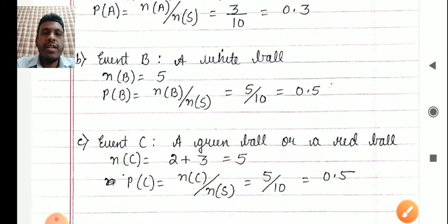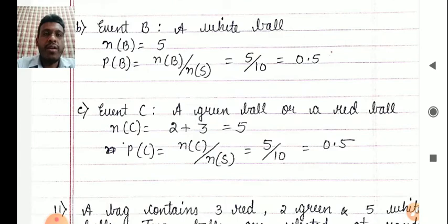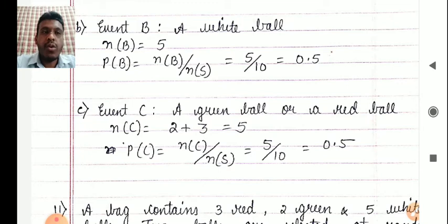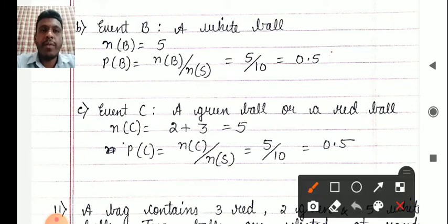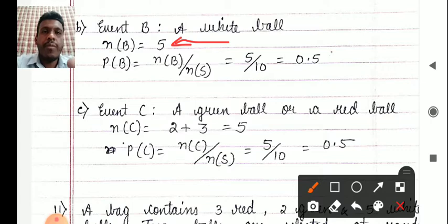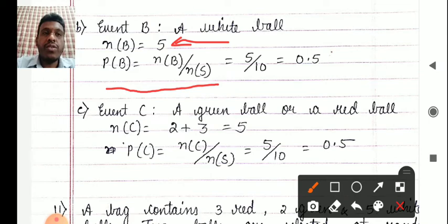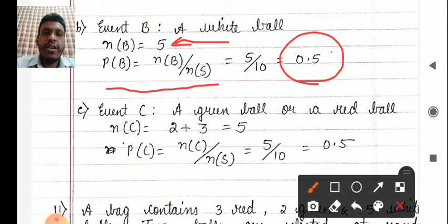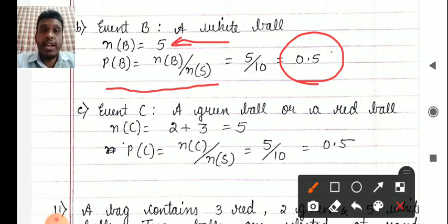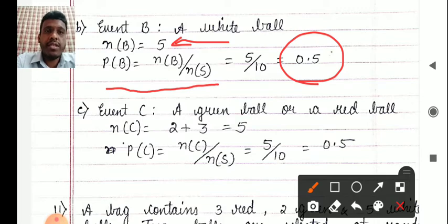Now let us take the second event: a white ball. Suppose the selected item is a white ball. How many white balls are there? We have five white balls. So P(B) = n(B) / n(S) = 5 / 10 = 0.5. This was also quite straightforward, similar to the previous subsection.